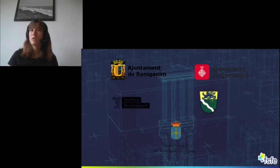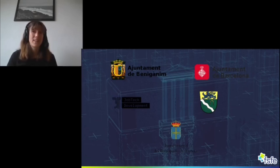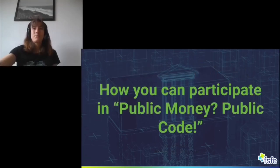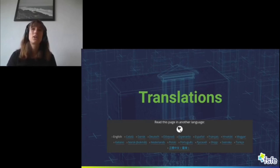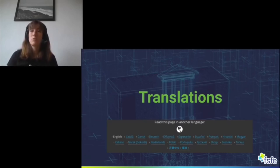Those were a quick overview of Public Money Public Code. Now the question is how you as an individual or as a group could participate in the campaign. For example, you could participate through translations. So far we have 20 translations of the open letter and more translations are always welcome, as it's always helpful if you want to approach your local government or a local public administration using the native language.